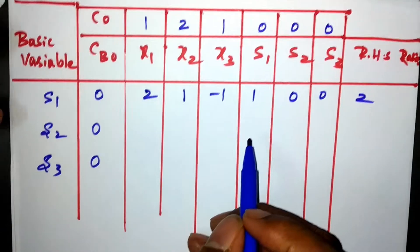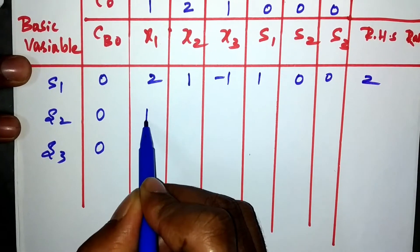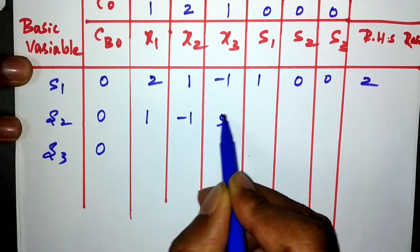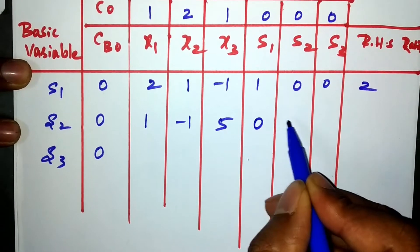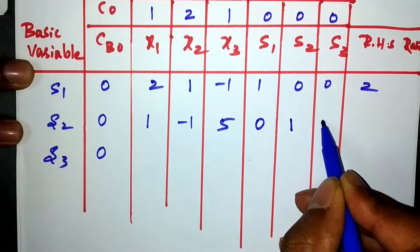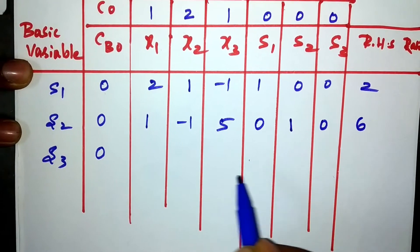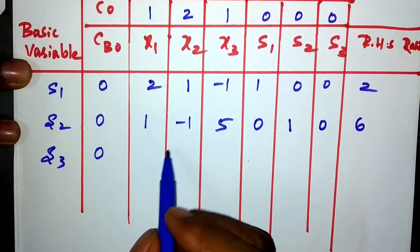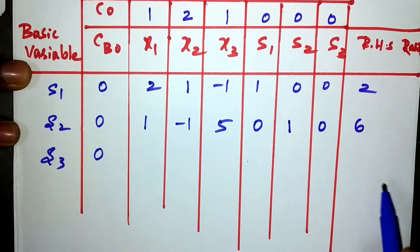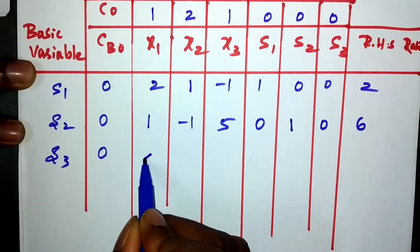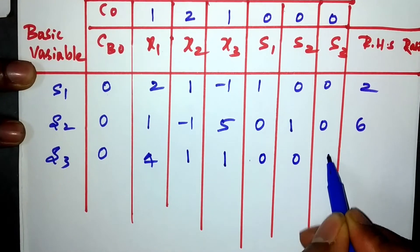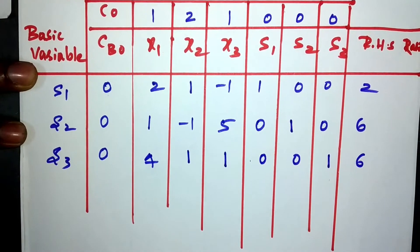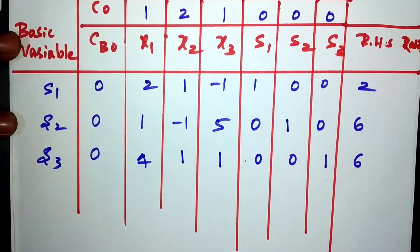Filling in all three constraint rows: the second constraint gives 1, minus 1, 5, s1=0, s2=1, s3=0, RHS=6. The third constraint gives x1=4, x2=1, x3=1, s1=0, s2=0, s3=1, RHS=6. So I have converted all three constraints into three rows of the table.